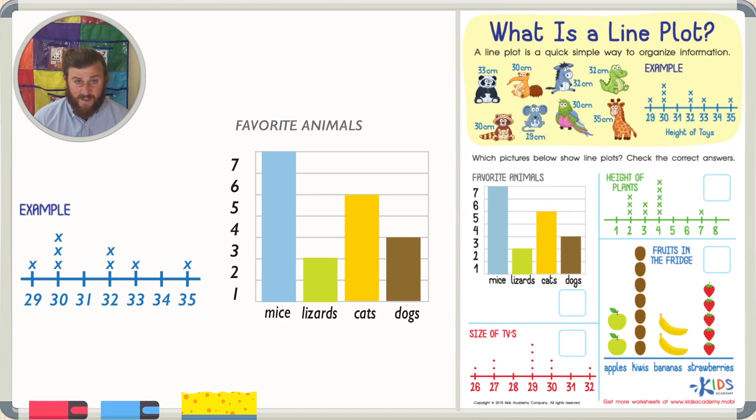So this first graph is really nice. It shows everyone's favorite animals. You can see mice, lizards, cats, and dogs. Although it's a really nice way to display information, it is not a line plot. Here's why. One reason it's not a line plot is it doesn't have the numbers on the bottom that our line plot had in the example.